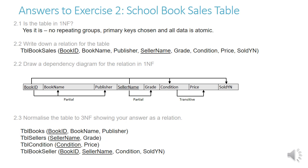Normalizing to 3NF: table books contains book ID, book name, and publisher. Table sellers contains seller name and grade. Table condition contains condition and price — this resolves the transitive dependency. Table bookseller contains book ID, seller name, condition, and sold yes/no.